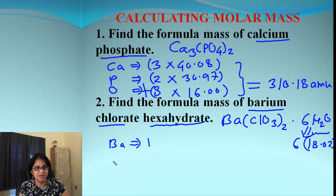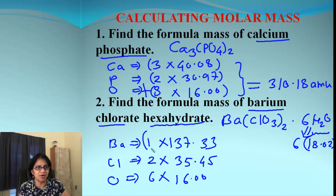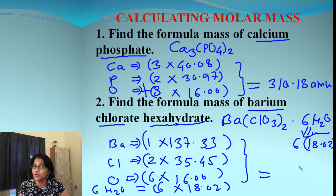And we are simply going to multiply that with the atomic mass for each of the atoms. So barium is 137.33, chlorine is 35.45, and oxygen is 16.00. So I'm going to add all of these, and also I'm going to add for six H2O, which will be six times 18.02. And when you add all these things, what we get is the total molar mass, which is 412.35.